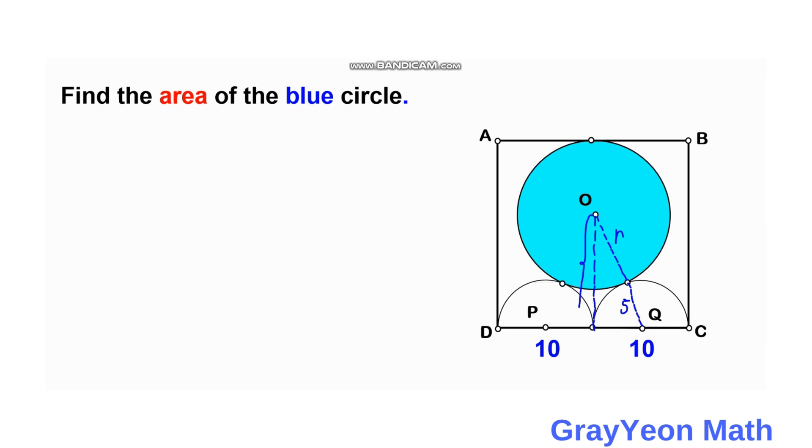is actually 20 minus R because the whole distance is 20 and we need to deduct this radius R. And this distance is 5.